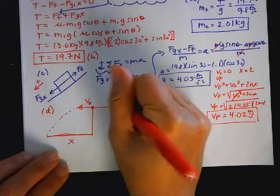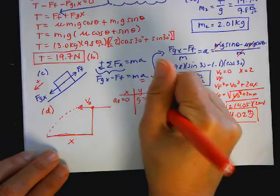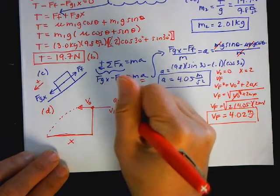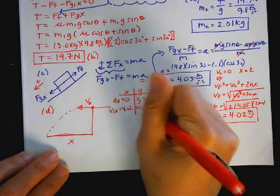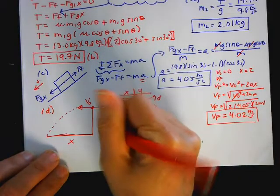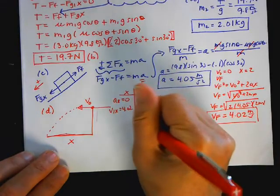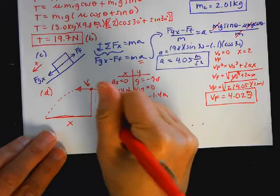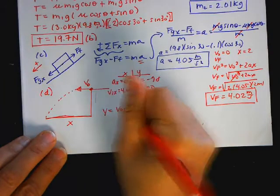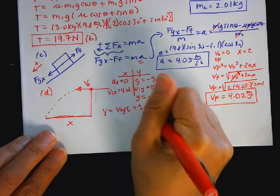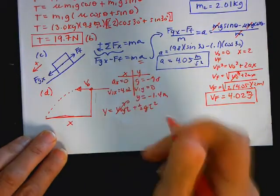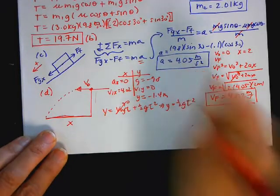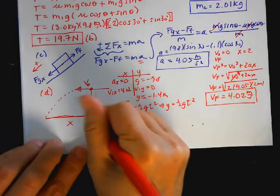So remember, with a projectile, I can write my X and Y given. So AX is 0, G is negative 9.8. This is all horizontal, so VIX is equal to 4.02. VIY is 0, and then they tell us this vertical displacement. Y is negative 1.4 meters. So now it's a projectile.